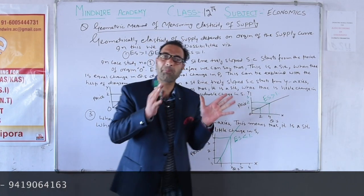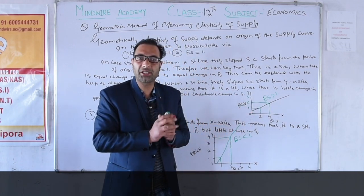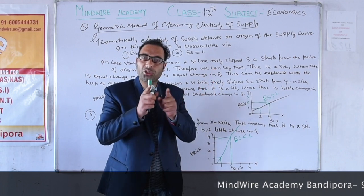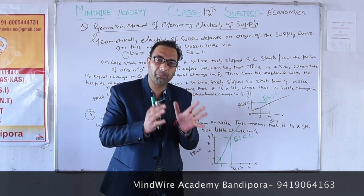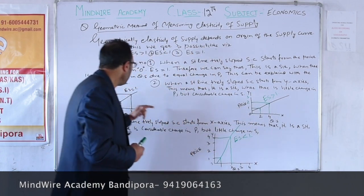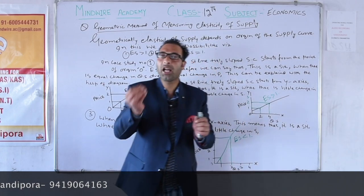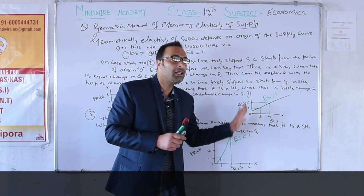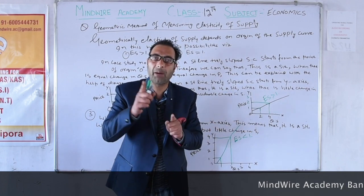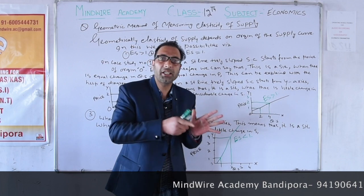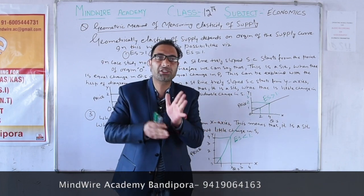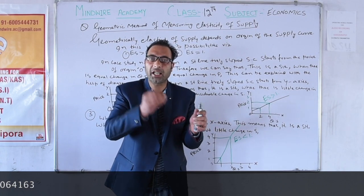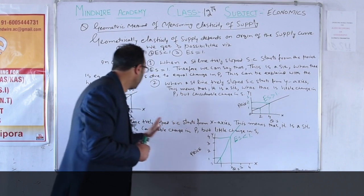As per case number three, when price rises, supply also rises; when price falls, supply also falls — this positive relationship depends upon the situation. When elasticity of supply is less than 1, there is considerable change in price but supply increases much less in comparison. So automatically you understand that price changes more but supply changes less. That is when we call it elasticity of supply less than 1.